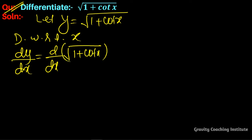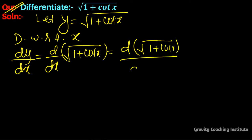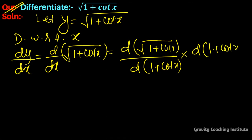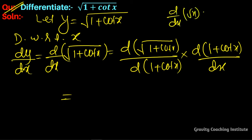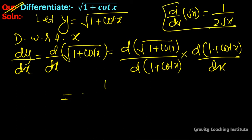Applying the chain rule: derivative of √(1 + cot x) equals 1/(2√(1 + cot x)) multiplied by the derivative of (1 + cot x) with respect to x. The derivative of 1 is 0, so we write 1/(2√(1 + cot x)).